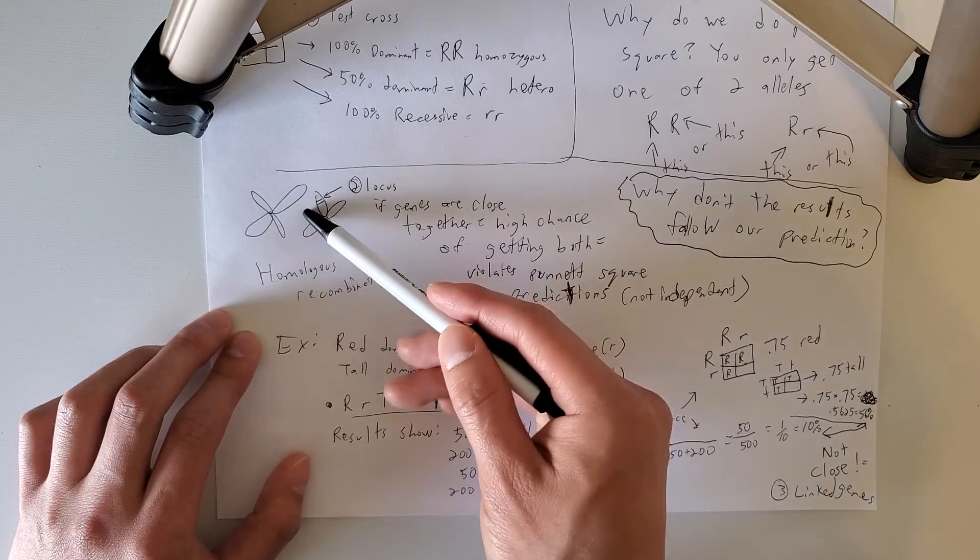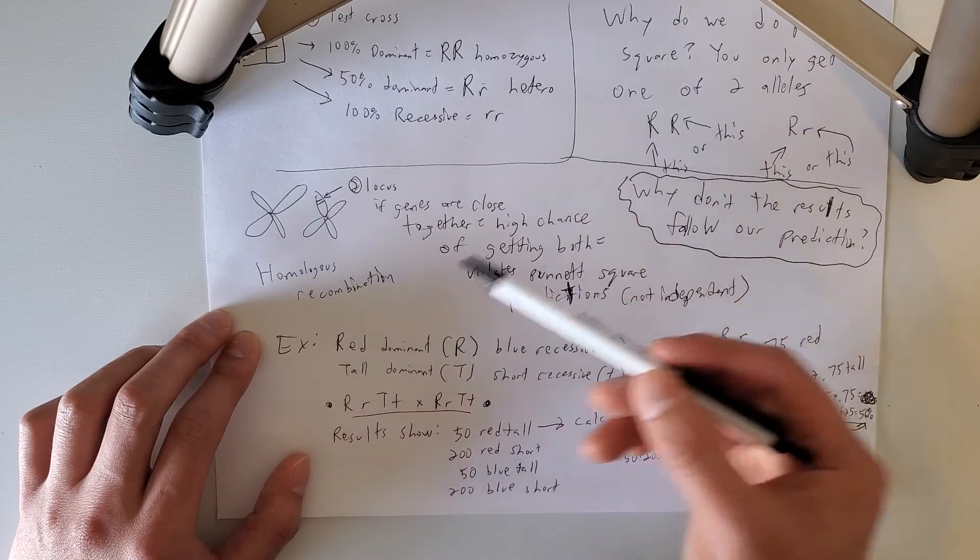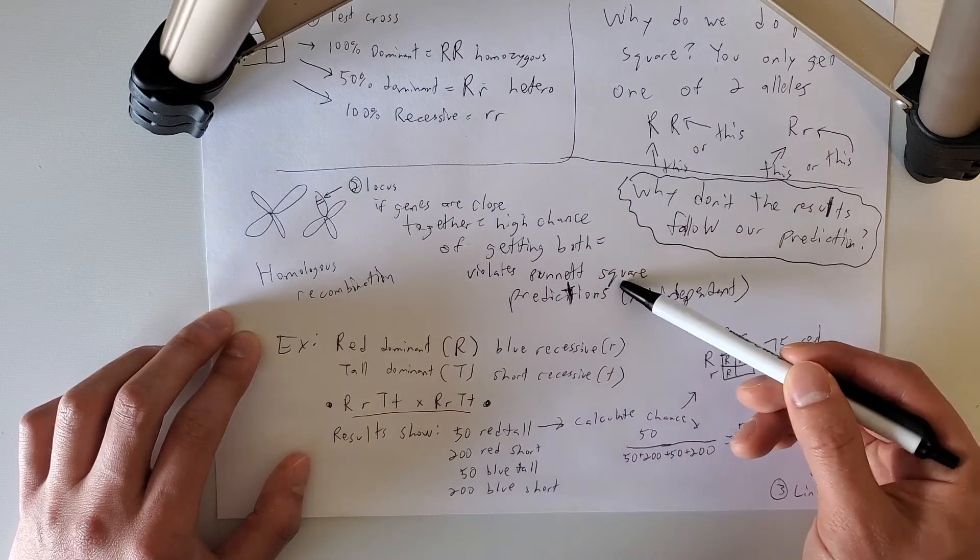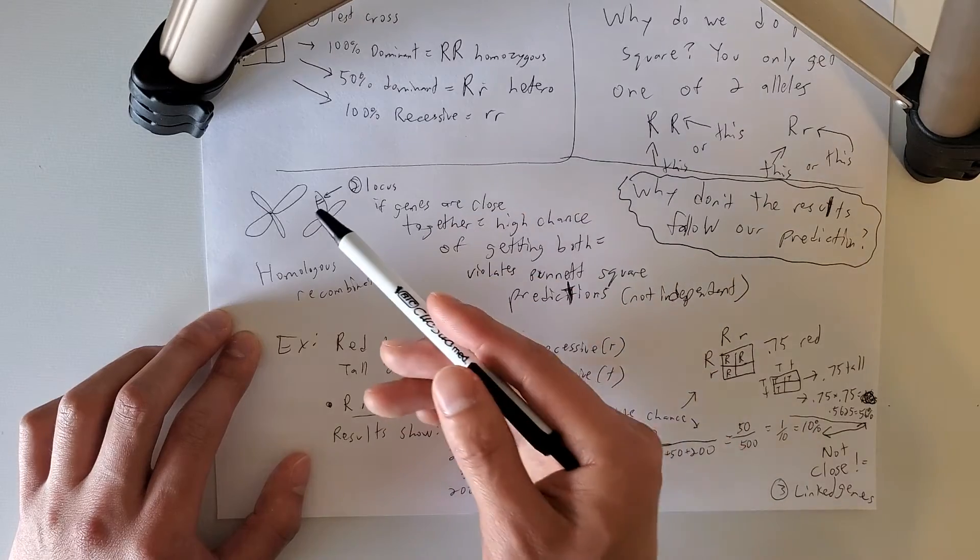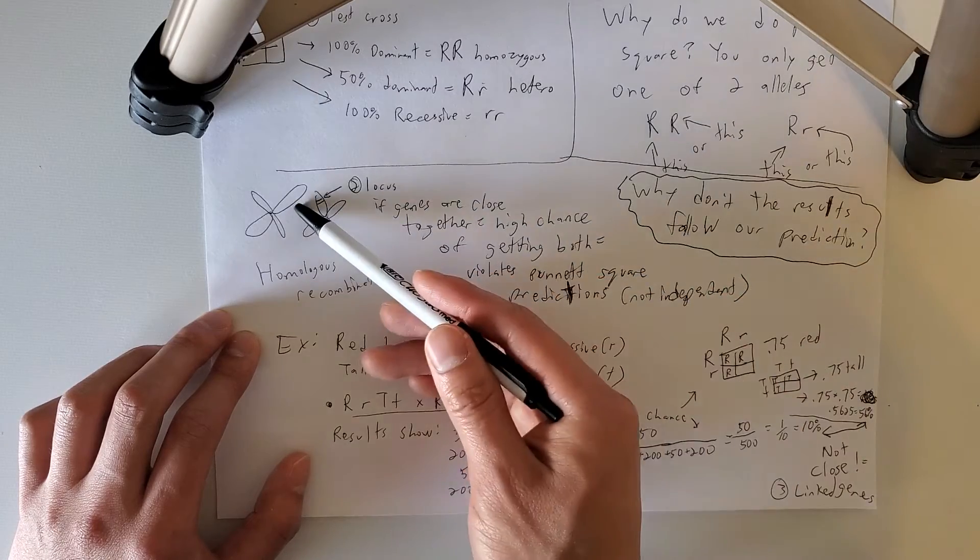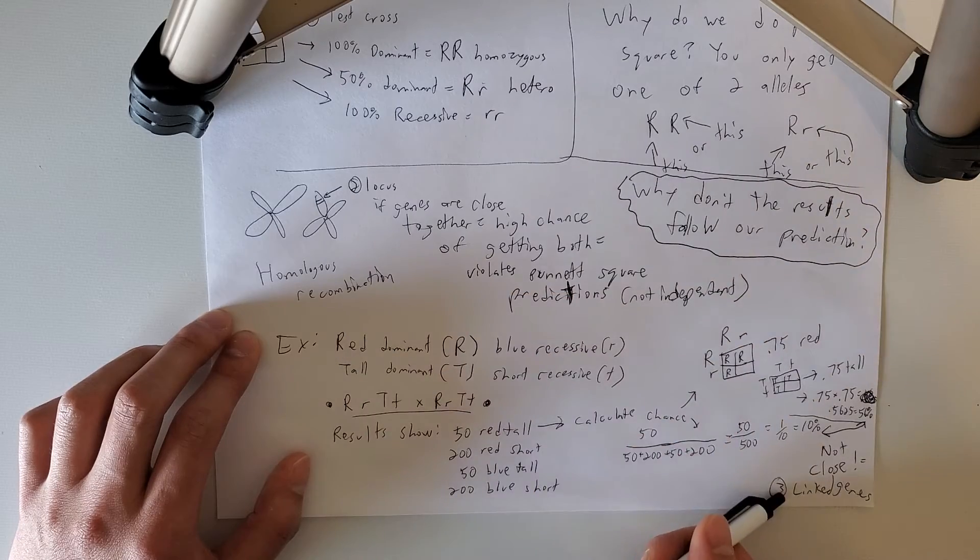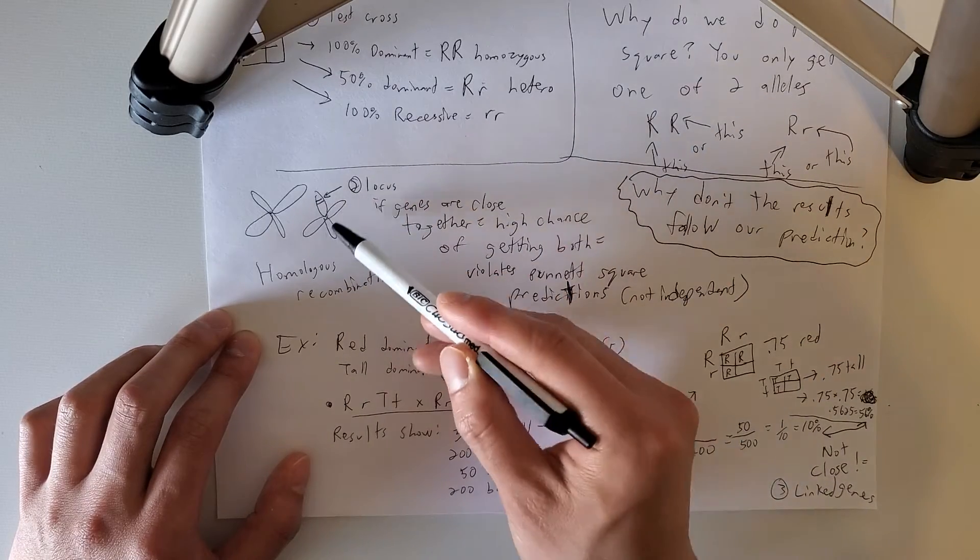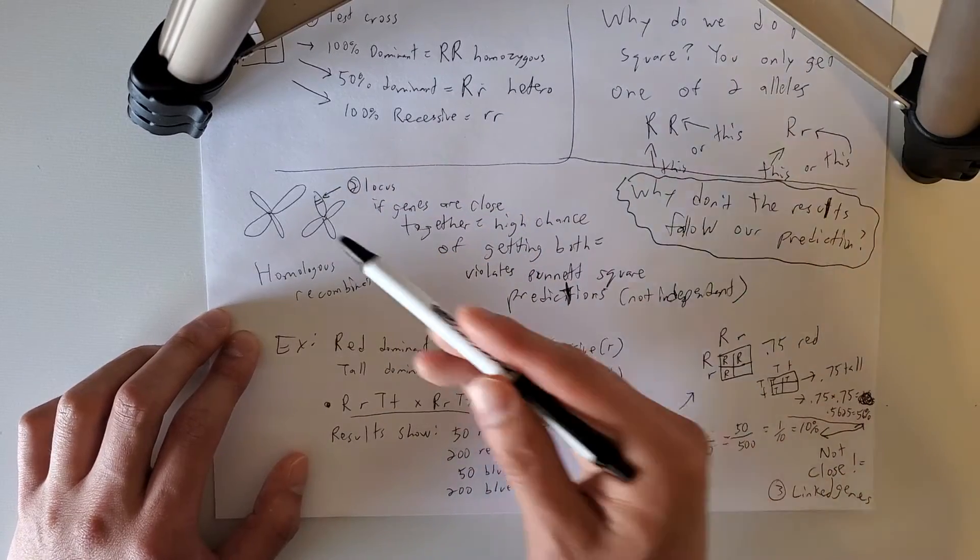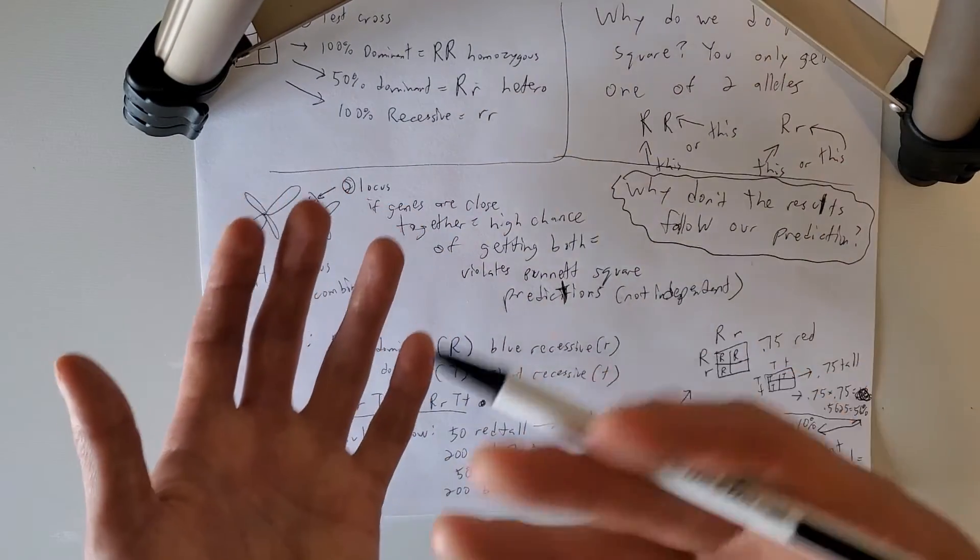During homologous recombination, locus means like their location on the chromosome. So if the genes are very close together, you actually have a high chance of getting both the genes. And this is going against the Punnett square prediction, because Punnett square says that you have a random chance of getting this gene or a random chance of getting this gene. But if the genes are so close together, they're actually called linked genes. So linked genes is when the genes are so close together that when you get one gene, you also get the other gene. And so that goes against the Punnett square prediction, which is saying that it's random whether you get one gene or the other gene.